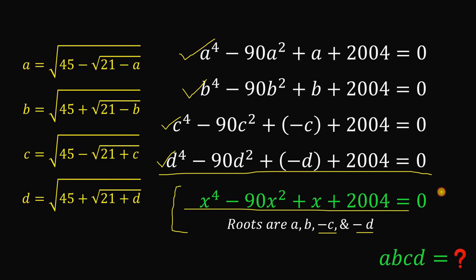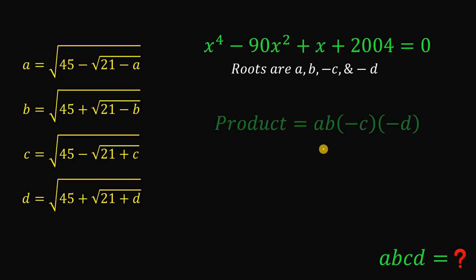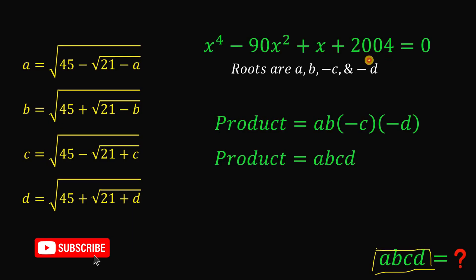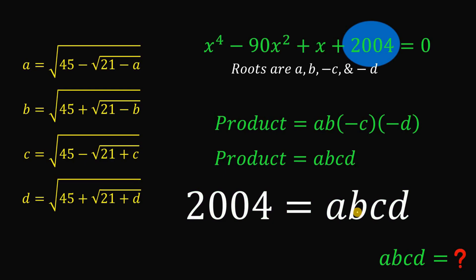Using Vieta's formulas on this quartic equation, the product of its roots equals a times b times negative c times negative d, which is equivalent to a times b times c times d — exactly the expression we want. This equals negative one raised to the fourth power, times 2004 over 1, which is simply 2004. Therefore, the value of the product a times b times c times d is 2004.